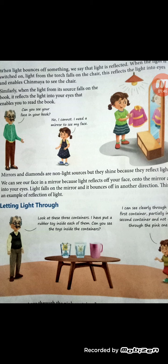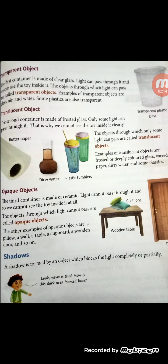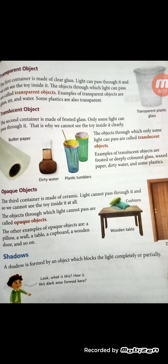Then grandfather asks: 'Why can we not see through the pink container?' She is unable to give the answer. Grandfather explains: 'These containers are made of different materials, and light can pass only through some materials and not through all materials. There are some materials through which light can pass — what do you call objects through which light can pass?'